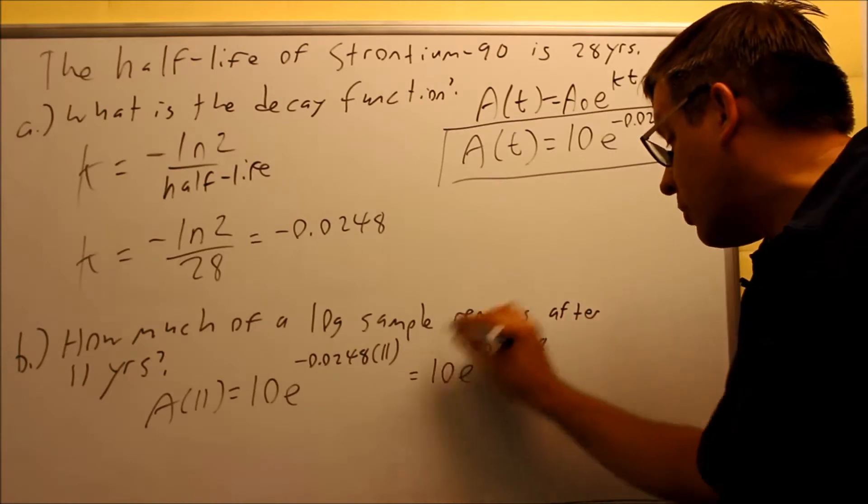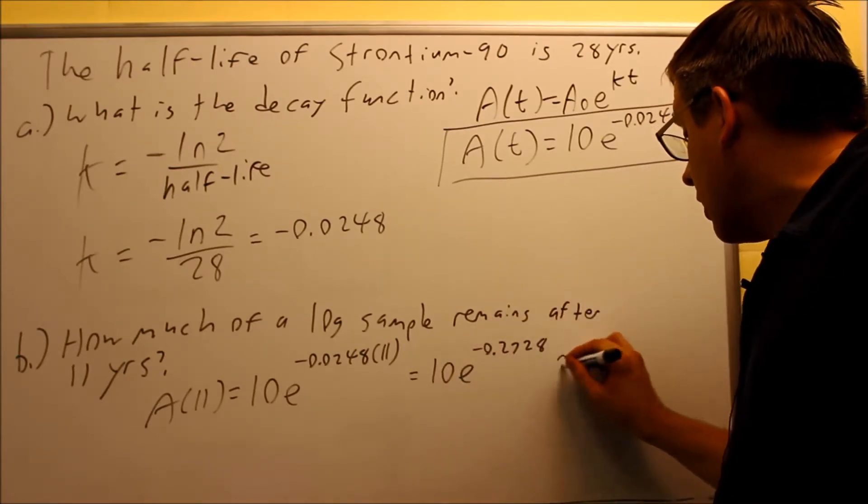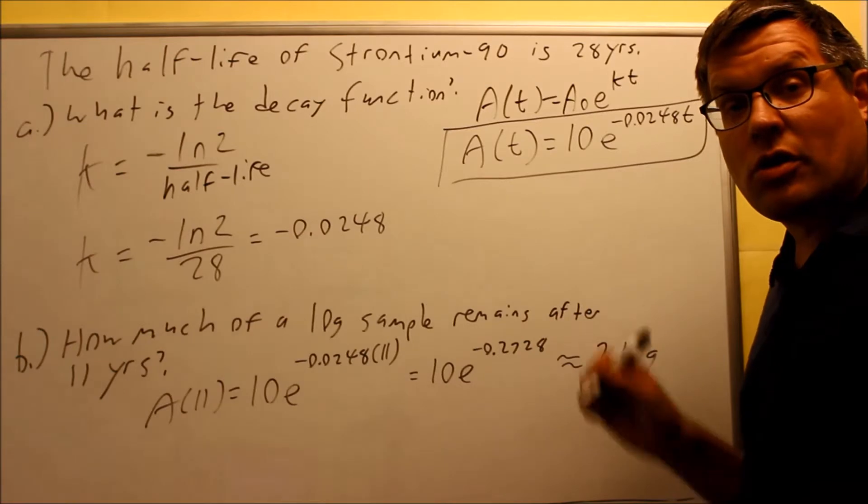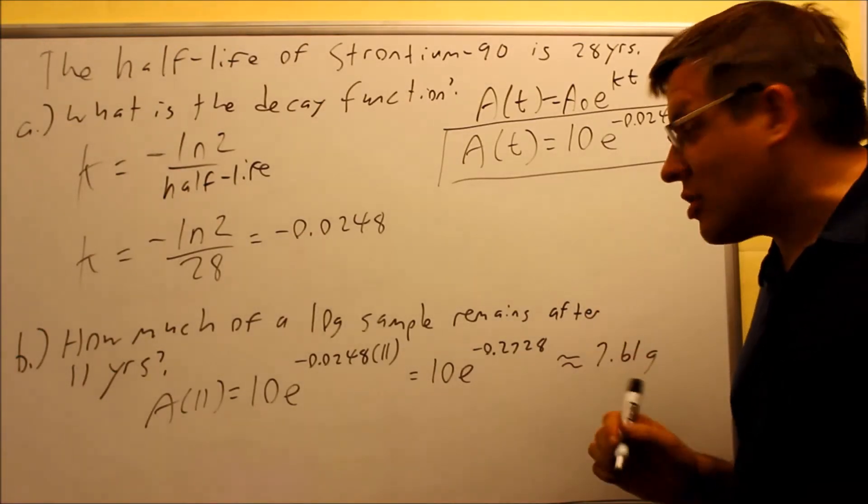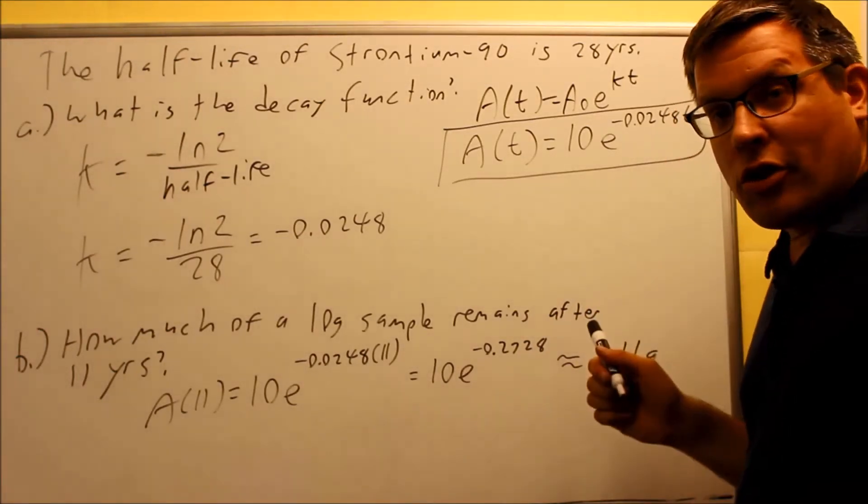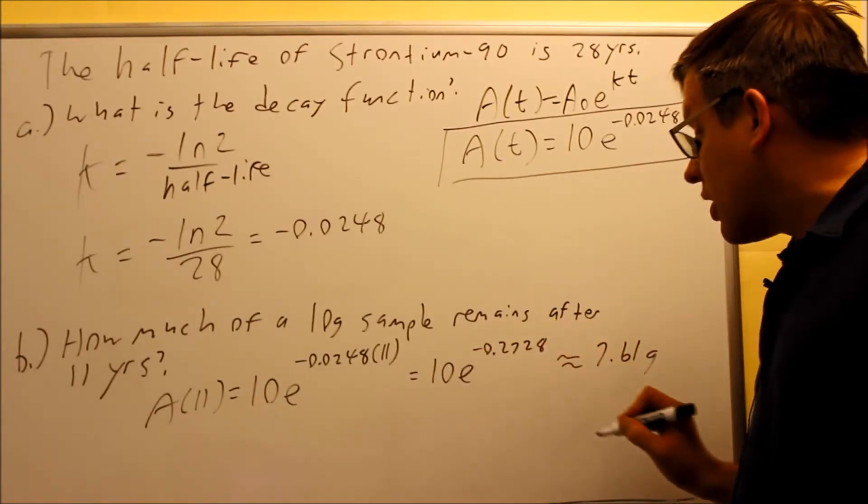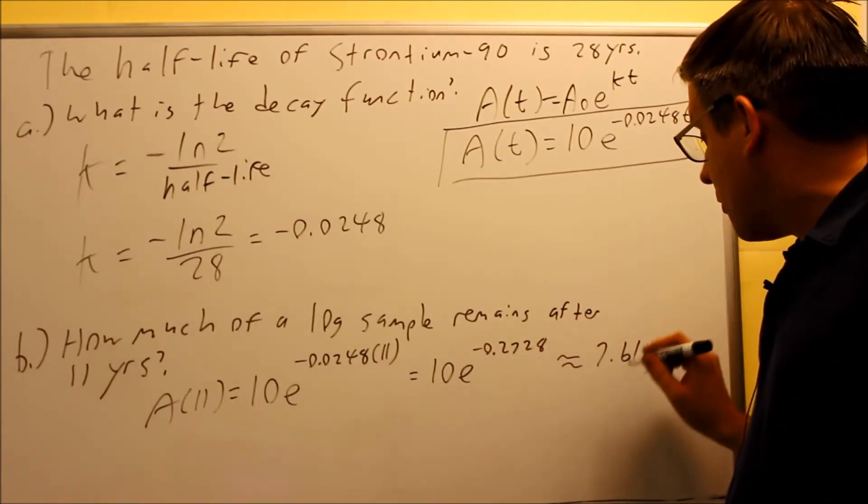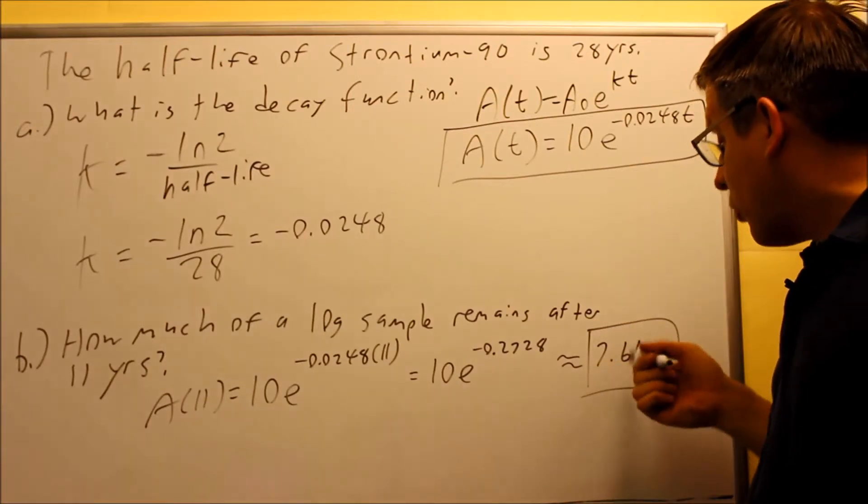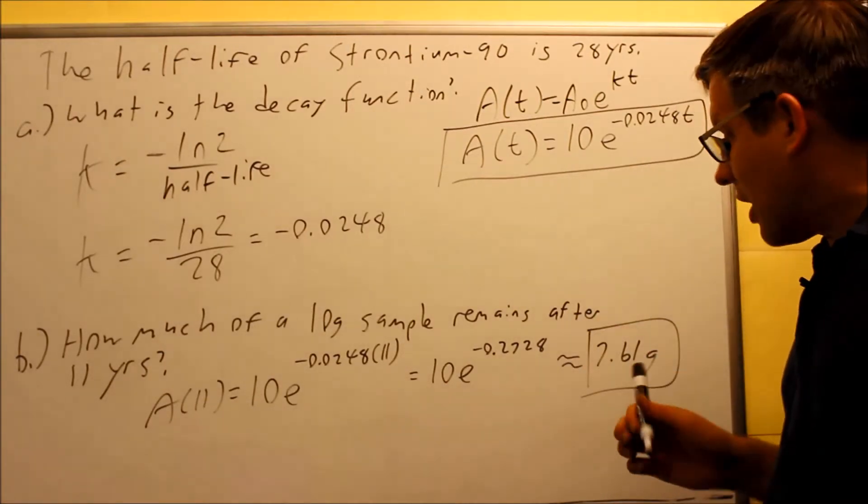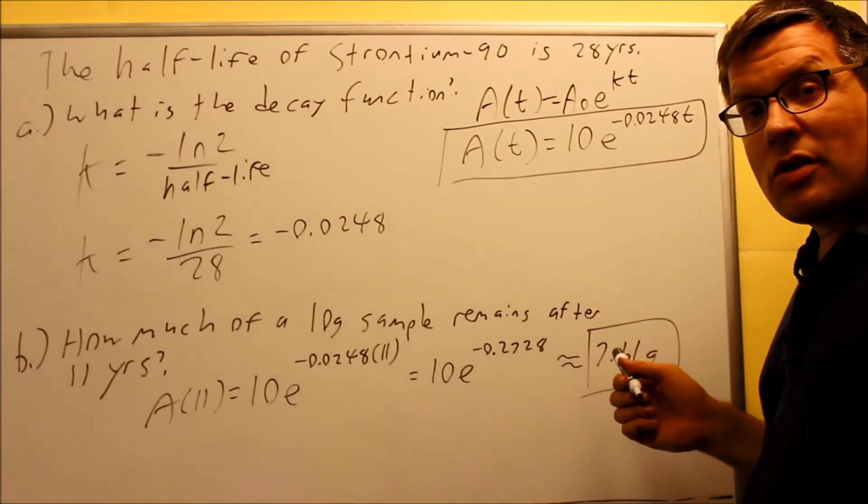And then you're going to put that whole part into your calculator and you're going to get approximately 7.61 grams. You can check that out on your calculator on your own just to make sure you're getting the correct amount there, but it's always good to do the exponent part first. Then you can put the rest of it in your calculator, and so this would answer part b. So after 11 years it's 7.61. Now let's talk about that to make sure that answer makes sense.